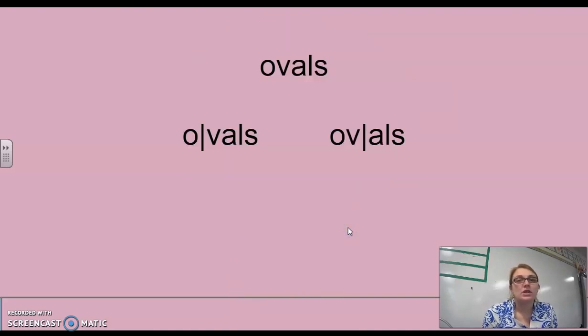Okay, now we're going to have a series of words that we have to figure out where the break is between the two syllables. Remember, if the vowel in question, in this case the O, is right at the break, that vowel will be a long vowel sound. So in this case, O. If it's not at the break, it's a short vowel, A. Okay, first, so do we have ovals or ovals?